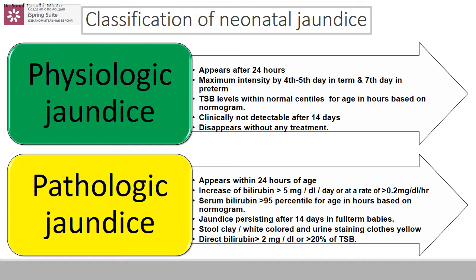Neonatal jaundice can be physiologic or pathologic. Physiologic jaundice appears after 24 hours of life, with maximum intensity by the 4th–5th day in term babies and by the 7th day in preterm babies. Total serum bilirubin levels remain within normal centiles for age based on the Bhutani nomogram. Clinically, this jaundice is not detectable after 14 days and should disappear without treatment. Pathologic jaundice appears within the first 24 hours of life.